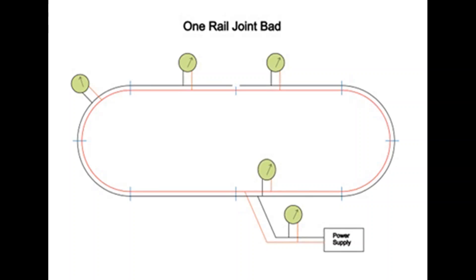Here, I'll show you what happens when you get one rail joint that is bad in your loop. I've indicated that as between the two upper straight sections, as you can see here. But the voltage, as indicated by the various meters, is okay all the way around the loop.